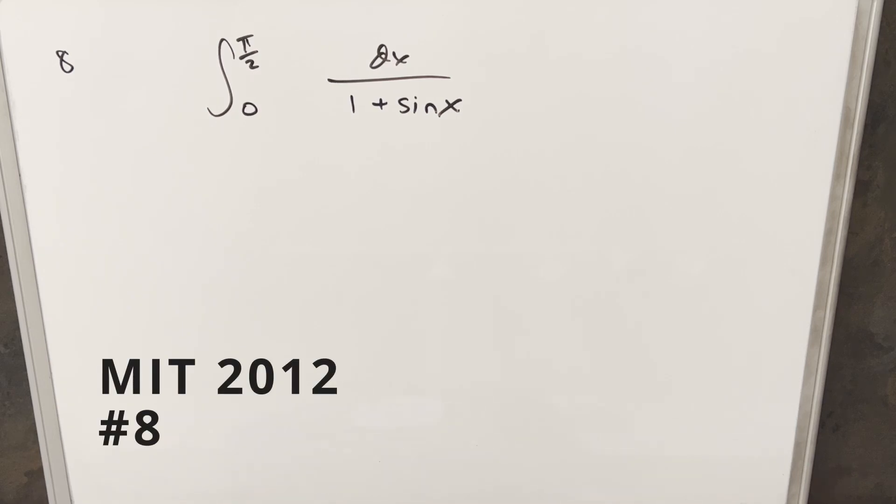Okay, we have here another integral from the MIT integration series. It should be 2012. This one here is problem 8. We have the integral from 0 to pi over 2 of dx over 1 plus sine x.